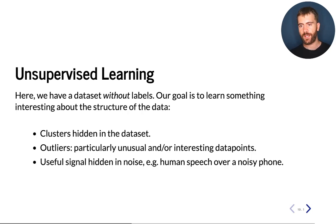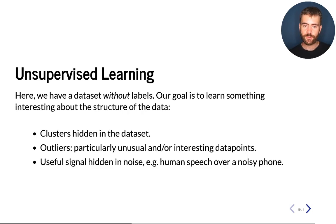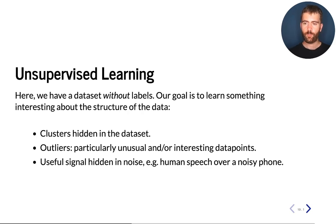Maybe we have groups of individuals that have certain similarities — similar physiological measurements — which means they may share similar diseases or absence of diseases. We can discover this just by inspecting the structure of the data, and it's also useful for visualizing that structure. Or maybe there are particular data points which are unusual, interesting, or errors that we want to identify. Another application is if we have a signal hidden under noise — if we know the signal has some interesting structure, we could try to recover it, for example, recovering human speech in a noisy room.